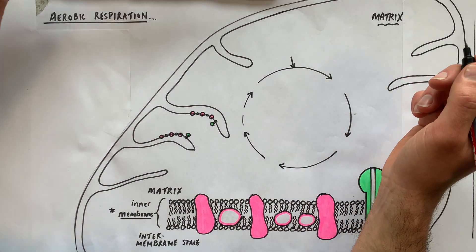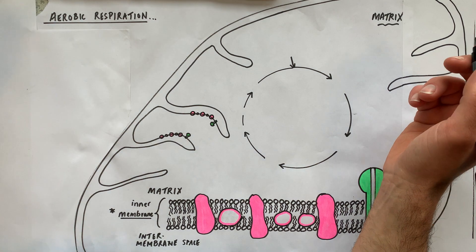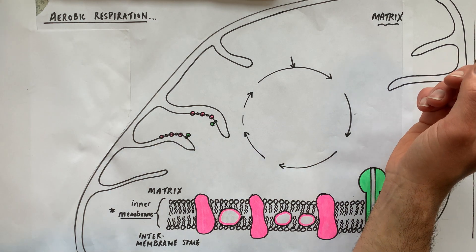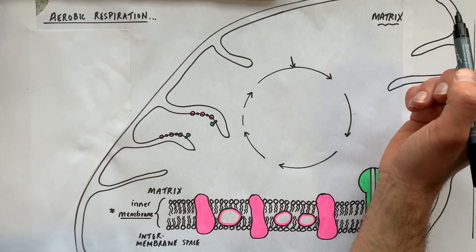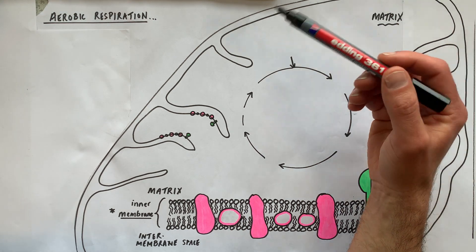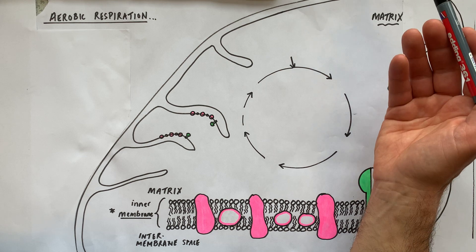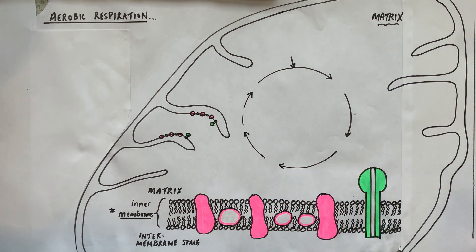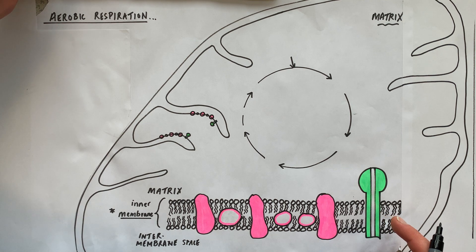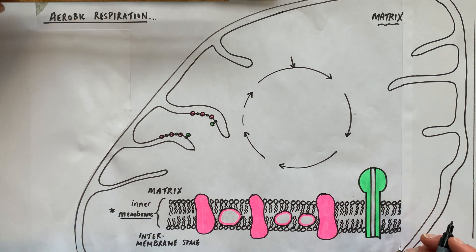In this video we're going to go through all the reactions of aerobic respiration inside a eukaryotic cell. We'll start with glycolysis in the cytoplasm, then talk about pyruvate and how it enters the mitochondrion, then the link reaction, the Krebs cycle, and lastly oxidative phosphorylation at the electron transport chain, which is located in the inner mitochondrial membrane.